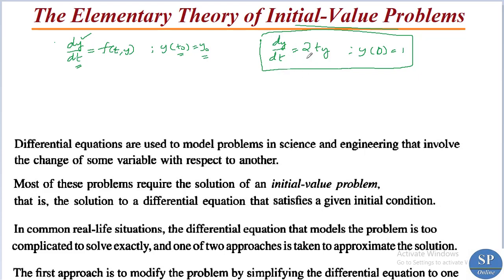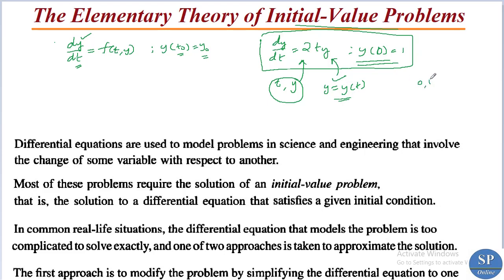A solution of an initial value problem is a relation connecting the independent variable t and dependent variable y that satisfies both the differential equation and the initial condition. If y = y(t) is a solution, it must satisfy y(0) = 1, meaning this curve should pass through the point (0, 1). When t equals 0, we have y equal to 1.